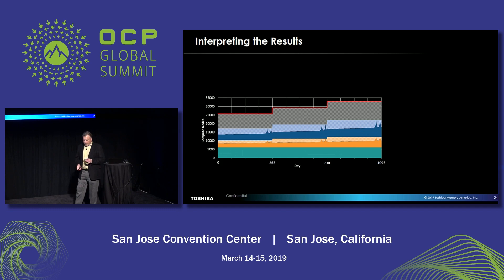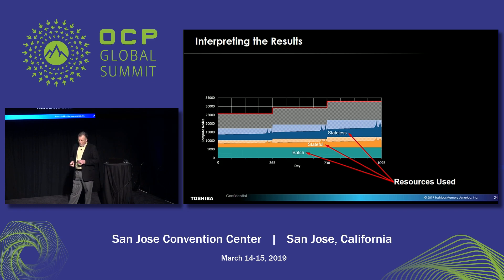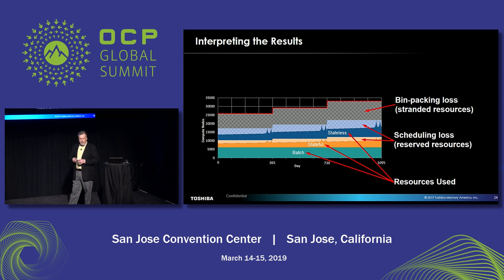Results come out in a graph showing every day from day zero to three years. The saturated colors show the number of equivalent machines used. On the left side you can see a compute node count: batch jobs using just over 5,000 nodes, stateful a couple of thousand, and stateless several thousand more. You can see the seasonal peaks in demand — this is a Christmas rush scenario. Scheduling loss — machines not needed most of the year but needed during spikes — is shown in the same color but lighter. Bin packing loss is shown in gray at the top. The total machines required is the red line, and as you can see, siloing would require buying 25,000 plus machines in the first year.